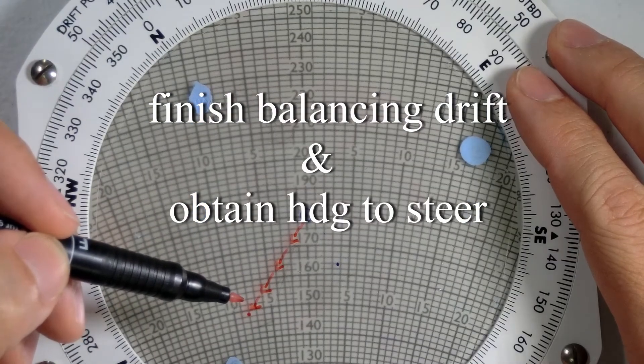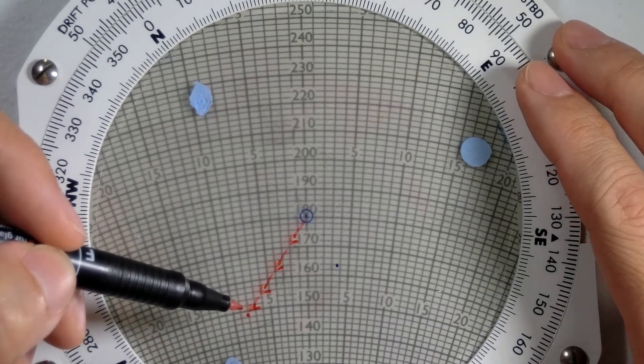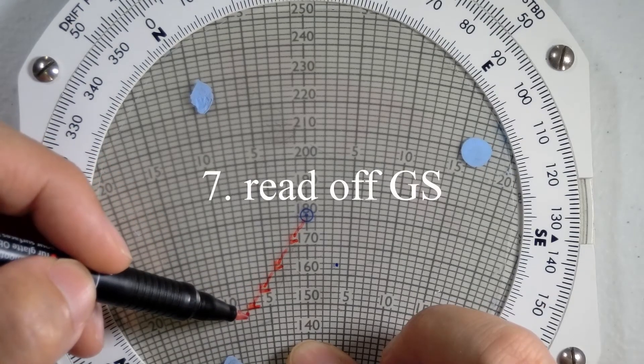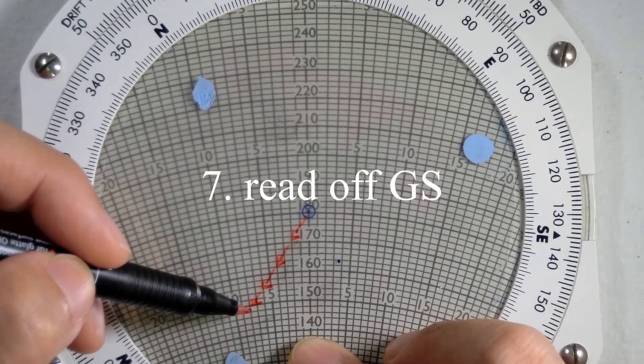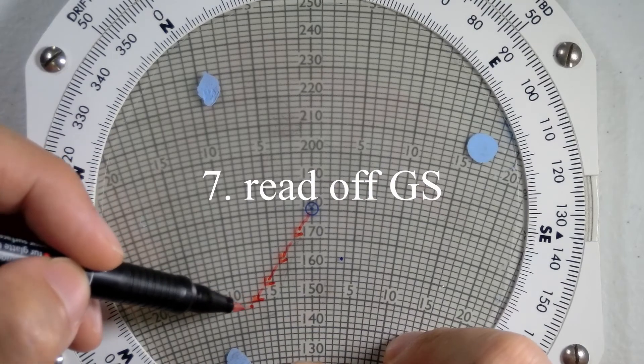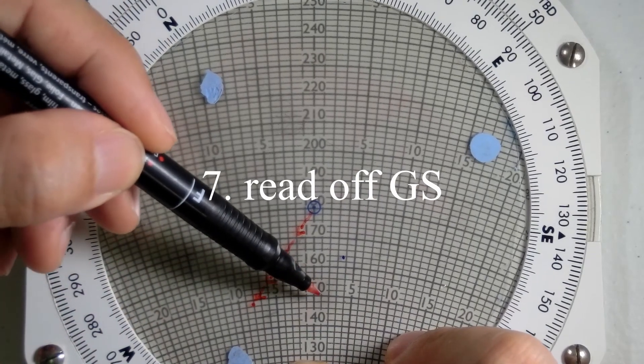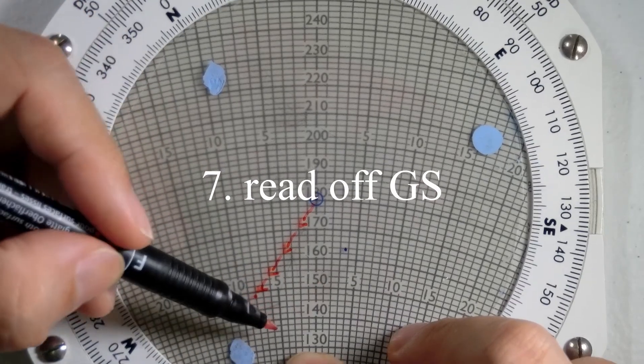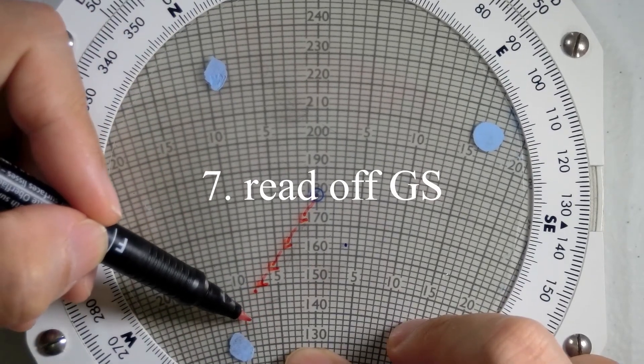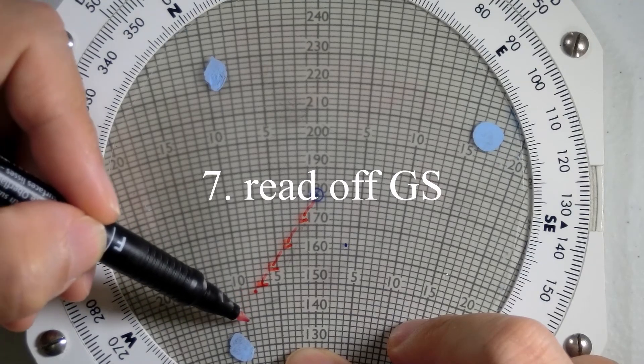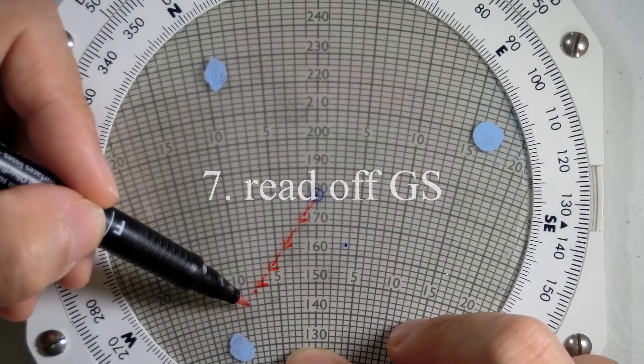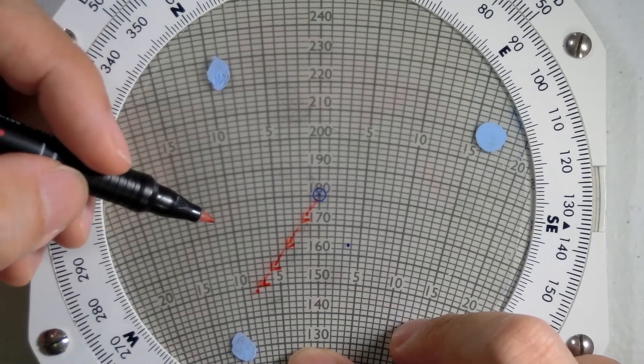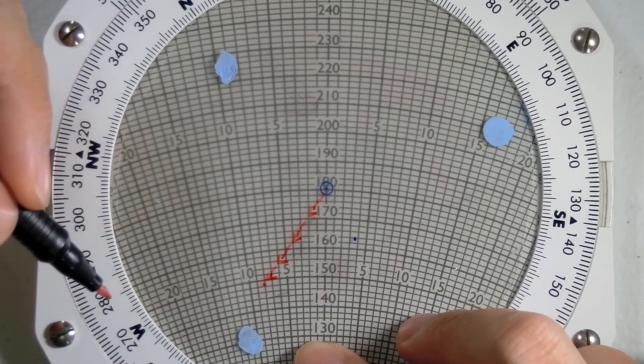And without moving anything, we can also obtain our ground speed. Our ground speed is obtained by looking at where the wind vector ends, this little dot. And it's lined up just below 150. So, this wind line of 150, well, it's just below that. Counting up from 140, every square is 2 knots. 142, 144, 146, 148 and a half. So, that's 149 knots. Our ground speed would be 149 knots.